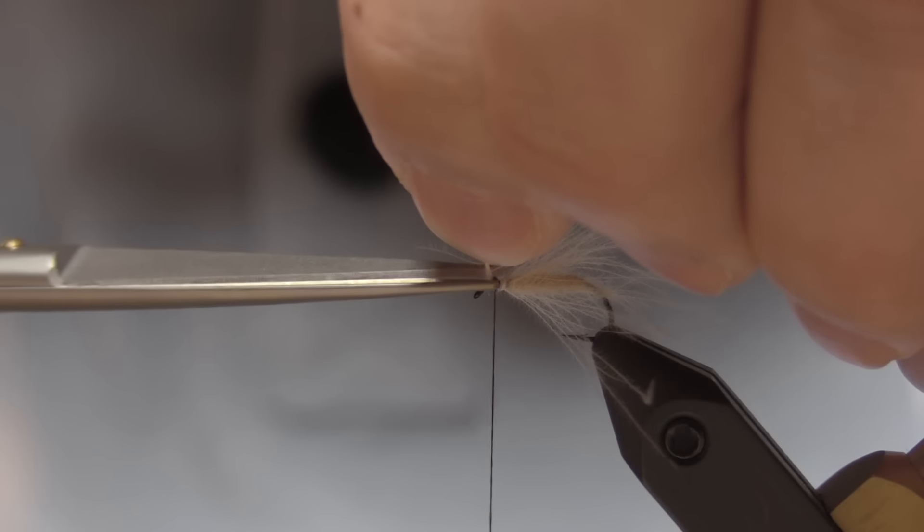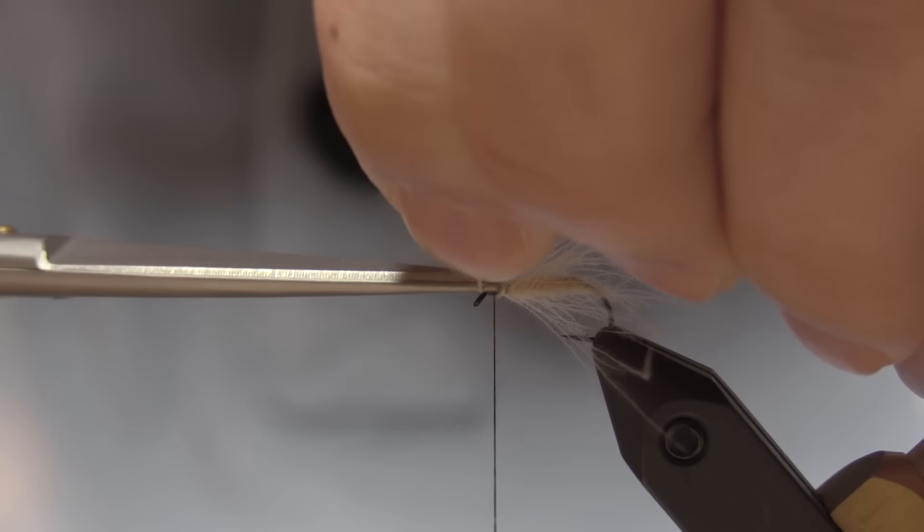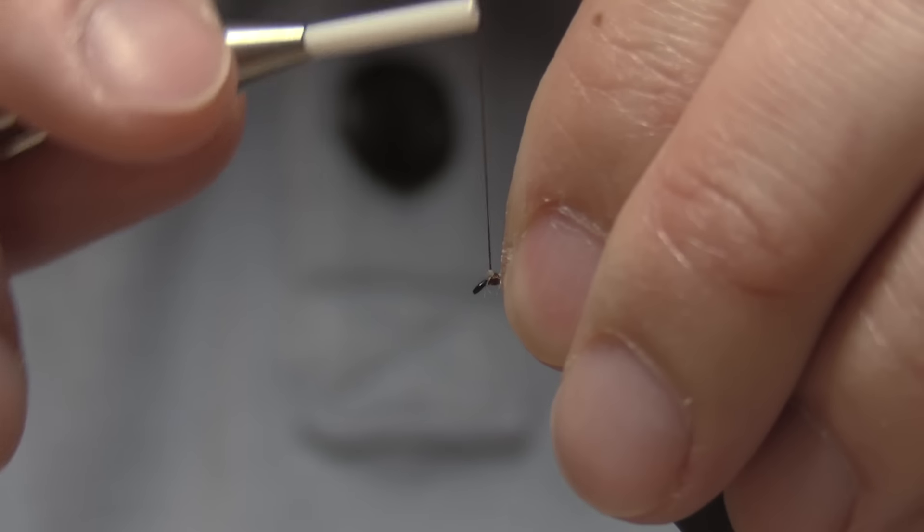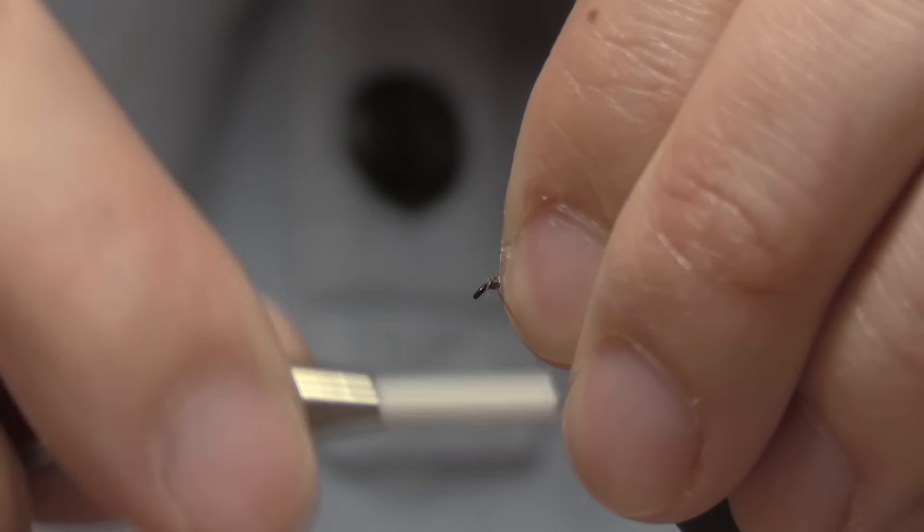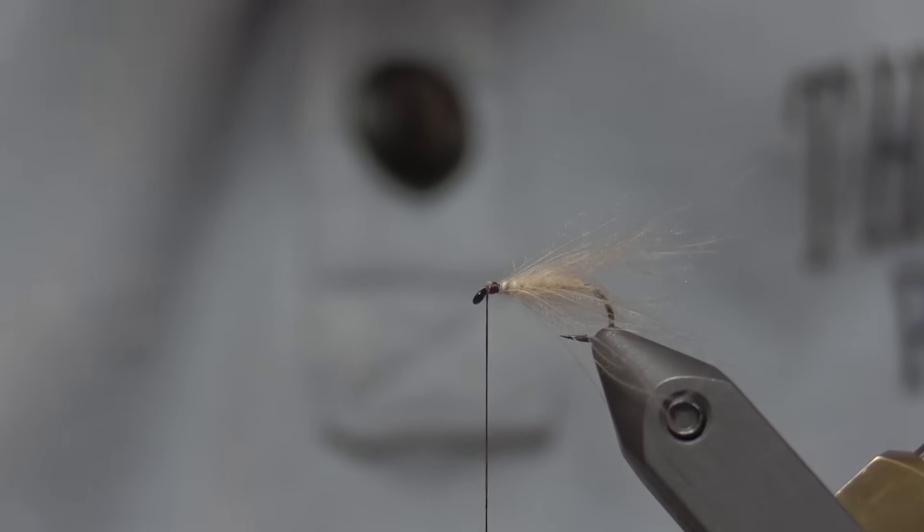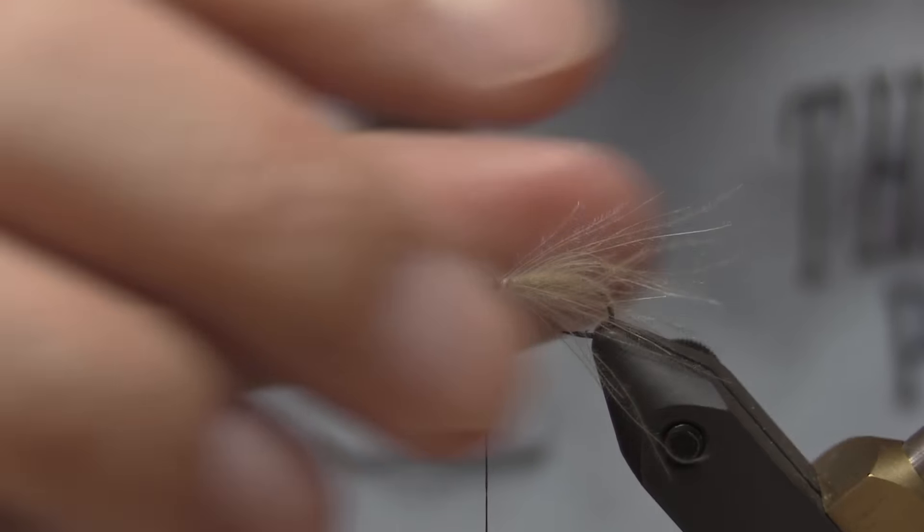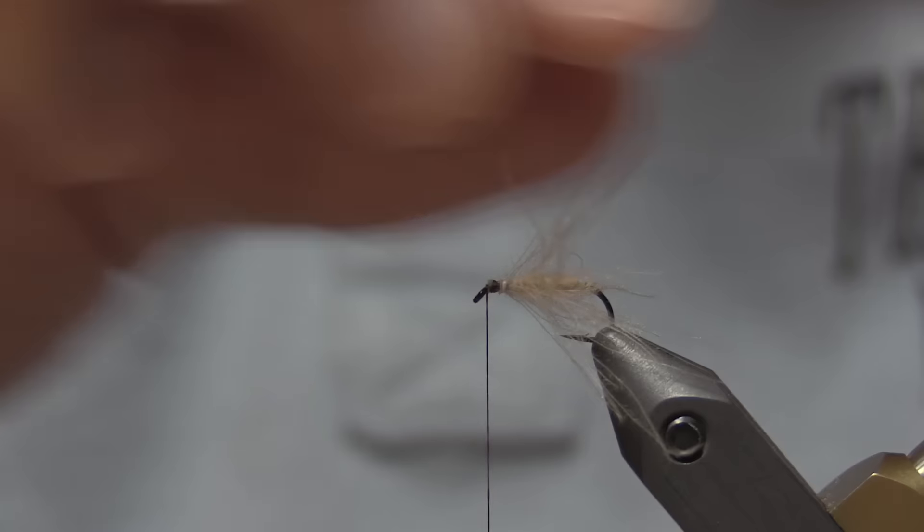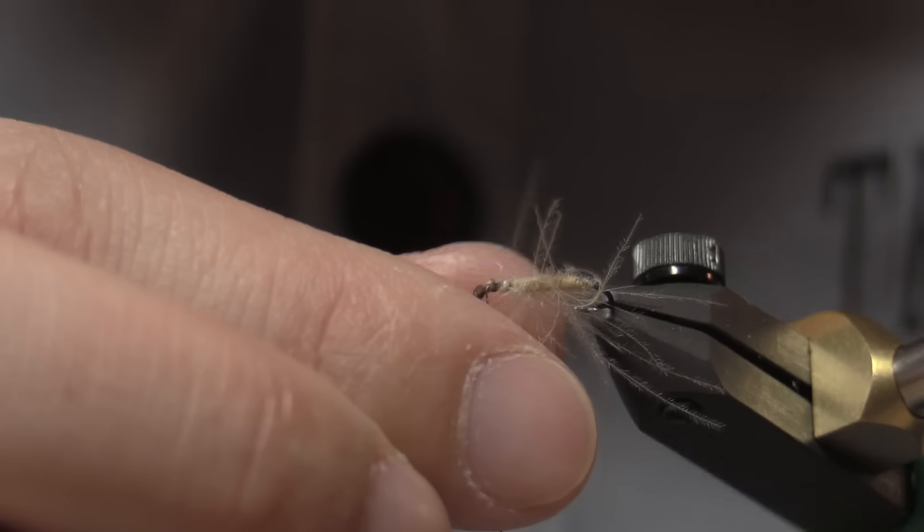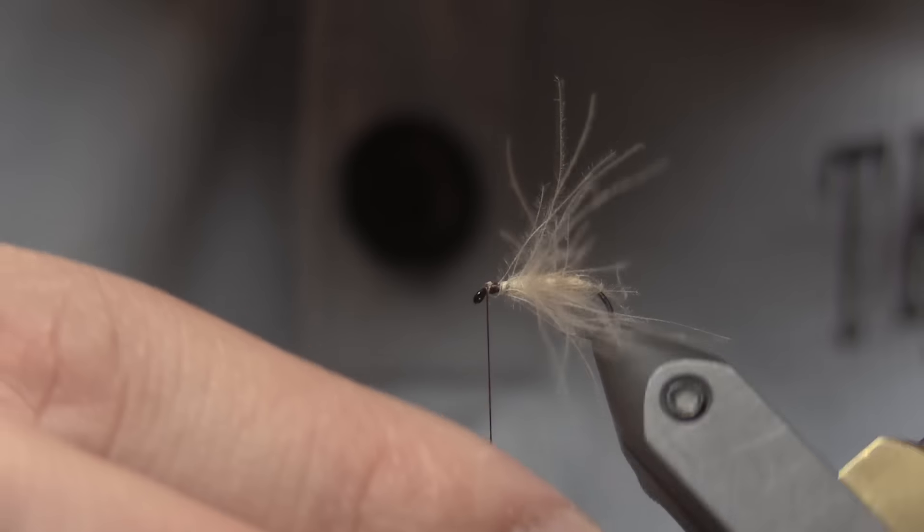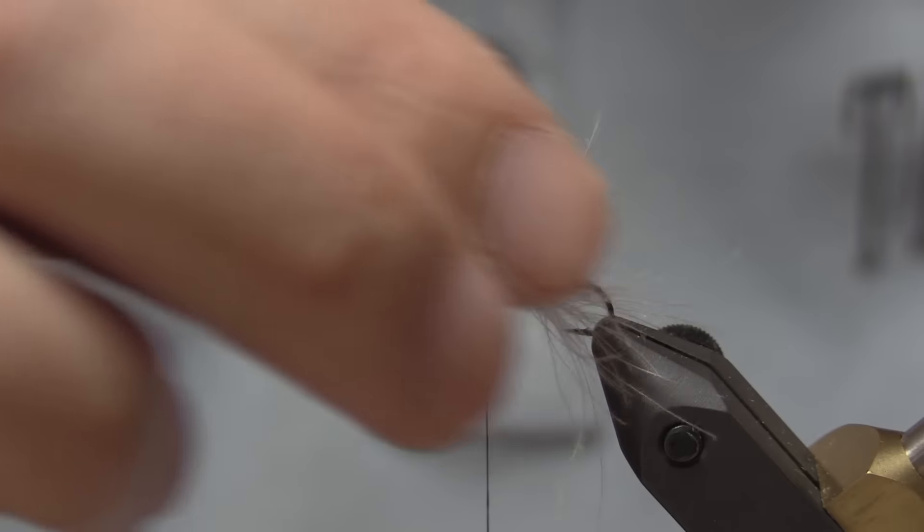And I will cut the tip close. And I'll take one more nice wrap to lock everything in. And there's the body of your fly right there. You can see, if I push the fibers up, that it looks dubbed. And then it has this shaggy appearance with the longer fibers.